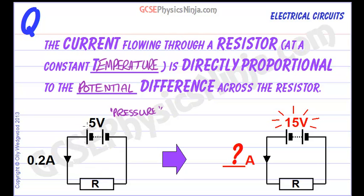So if you double the pressure, you'll double the current. So if we had 10 volts here rather than 5 volts of potential difference, we would have 0.4 amps of current flowing.